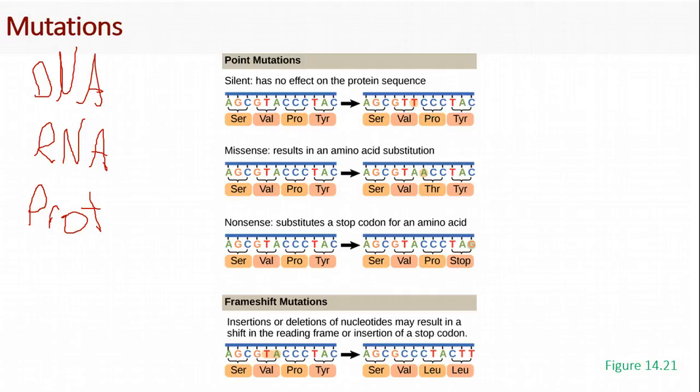So here you can see in this silent mutation, we have an amino acid called valine, VAL. That's coded by this sequence of DNA, which is GTA. If we get a mutation that goes unrepaired, we might have a GTT. Well, it turns out that GTT also codes for valine. So our final protein product, serine, valine, proline, tyrosine, will be the same as it was before the mutation.